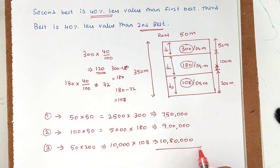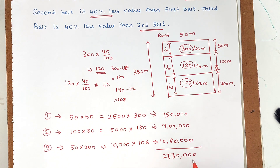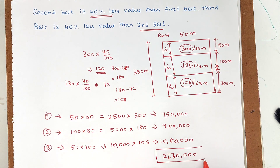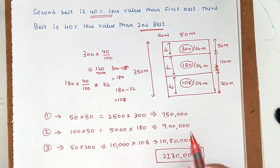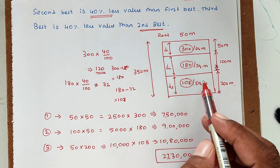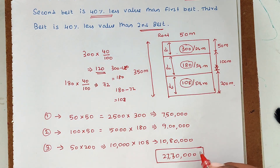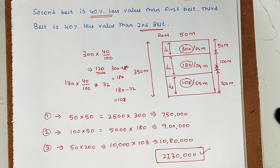The total value is 7,50,000 plus 9,00,000 plus 10,80,000 equals 27,30,000 rupees — that is 27 lakhs and 30,000. We cannot apply the same land value to the entire area, so we divide it into belts. This gives us a total value of 27 lakhs and 30,000. This is how we solve the problem using the belting method. Thank you.